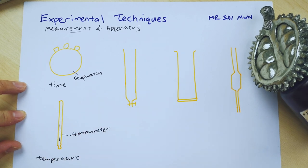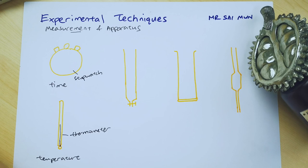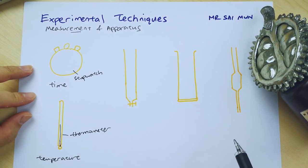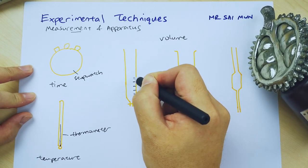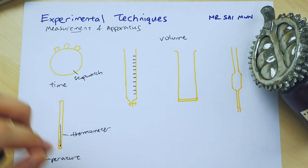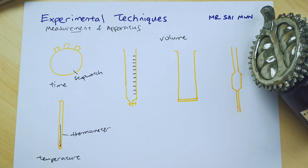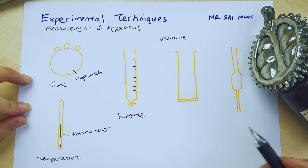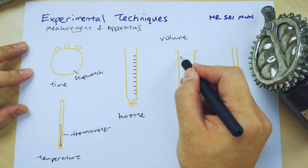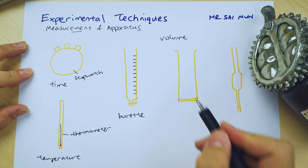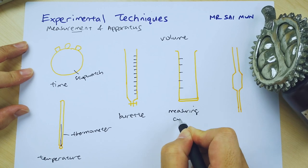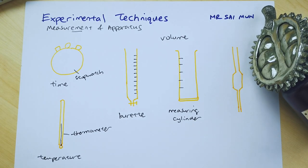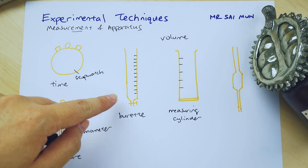Now the one they want to test your understanding on is how to measure volume — specifically comparing three instruments. First, if you have a tall cylindrical shape with a scale at the side, this is called a burette, which you commonly see in the acid and base chapter. If there's no scale, it's a gas jar. If there are lines at the side with a scale, it must be a measuring cylinder.